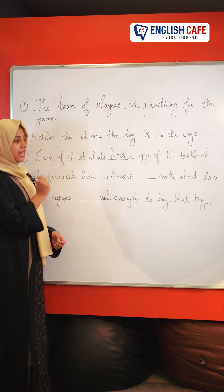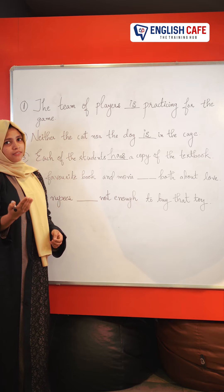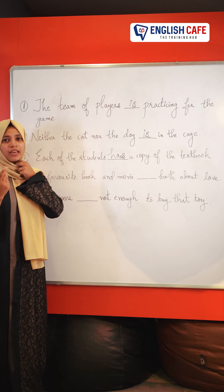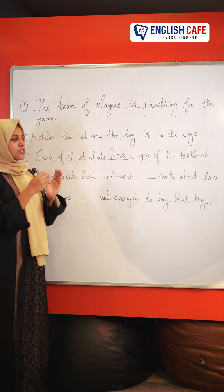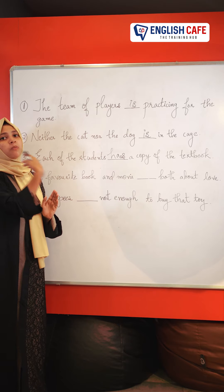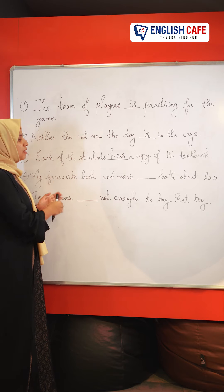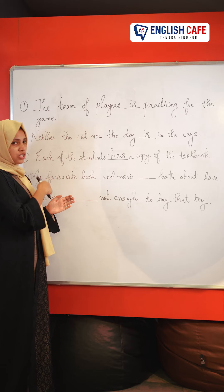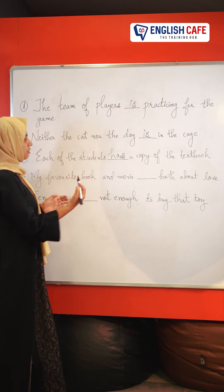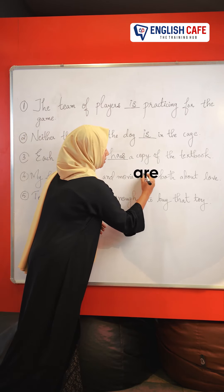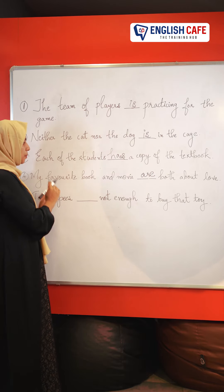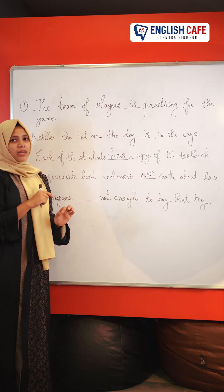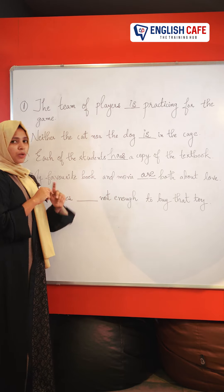Next one: My favourite book and movie dash both about love. Here, 'my favourite book and movie' is a plural subject, because two items are joined by 'and'. A plural subject takes a plural auxiliary verb. So, the answer is 'are' — my favourite book and movie are both about love.